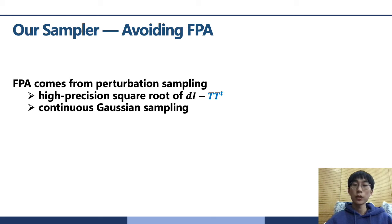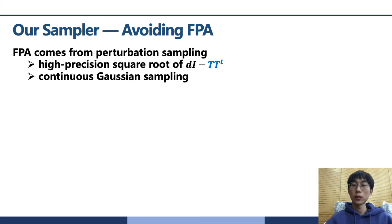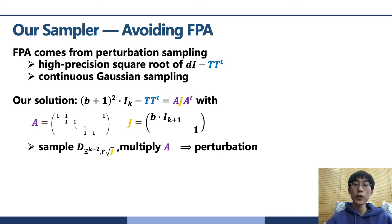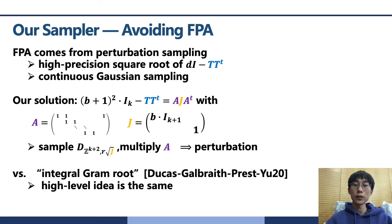We used the same matrix factorization shown in Genise-Micciancio-Atchaya. So our algorithm follows the same steps with them. But we implement the step one, perturbation sampling, differently. In GM-Atchaya, the floating point arithmetic comes from perturbation sampling. They use Cholesky decomposition and sometimes using continued Gaussian sampling in the implementation. To avoid floating point arithmetic, we employed this integral matrix decomposition with A and G. The matrix G is diagonal.